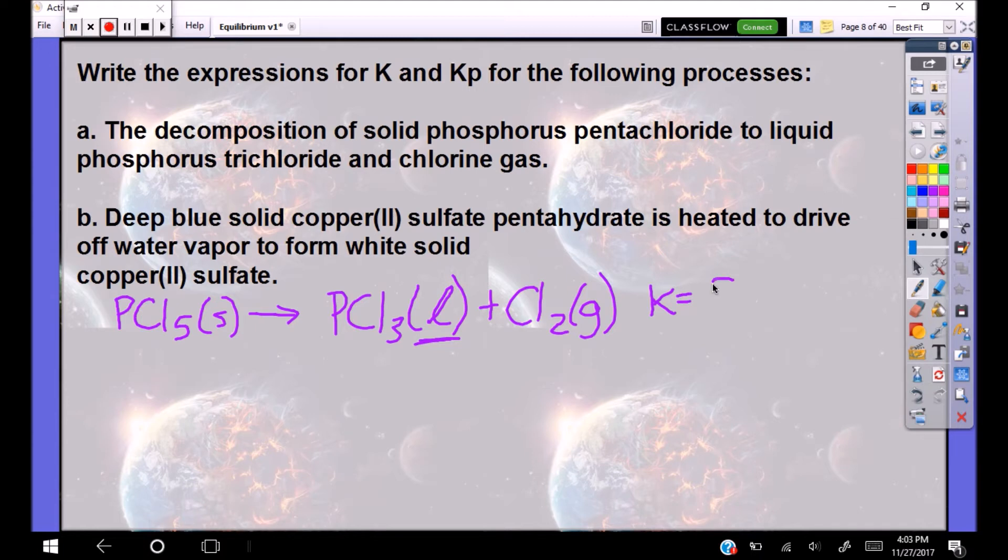If we were to write the equilibrium expression for this, K is equal to my product Cl2 and that's it. Why does nothing else belong in that equilibrium expression? You should have said the phases. Look at this. We got a solid and pure liquid. Solid and pure liquid have no business in your equilibrium expression. If you wanted to write Kp, you could talk about this in terms of pressures. Kp, we use the convention P of our gas. So P of Cl2. If we had an exponent that we had to write, we would put parentheses around it and then to the power. We only do parentheses with Kp. If we're talking about K, or in this case, Kc, we're just looking at concentrations and we use brackets.